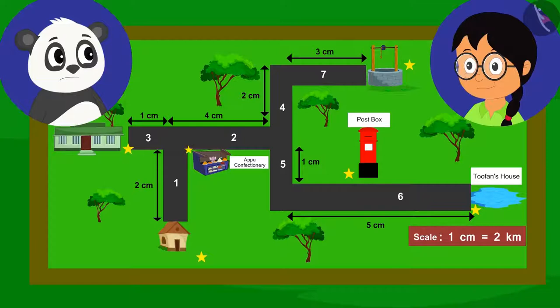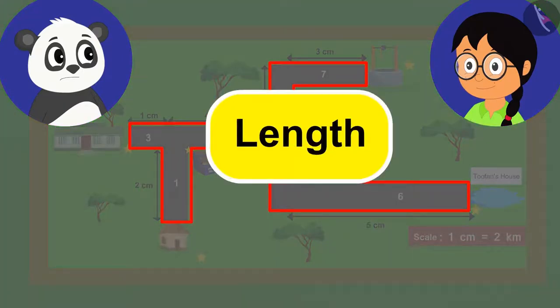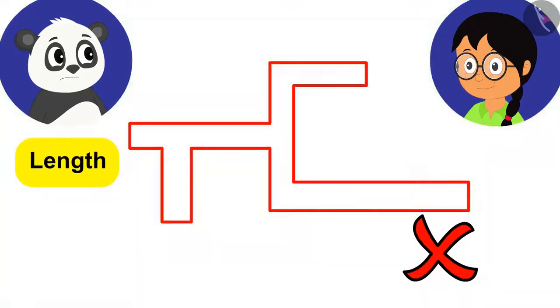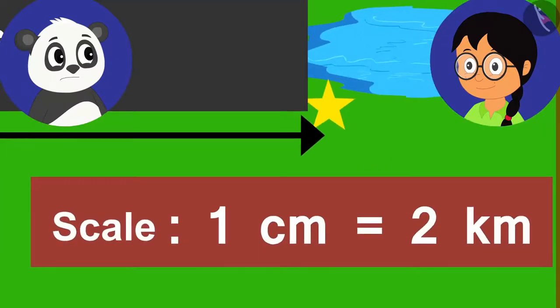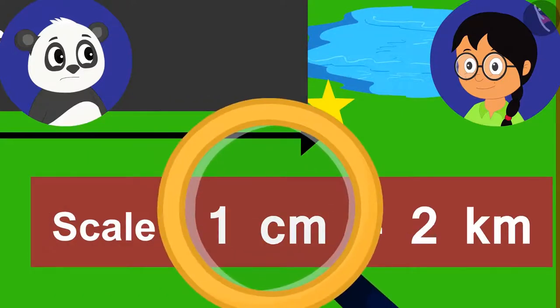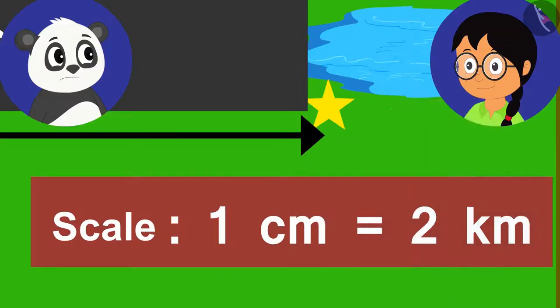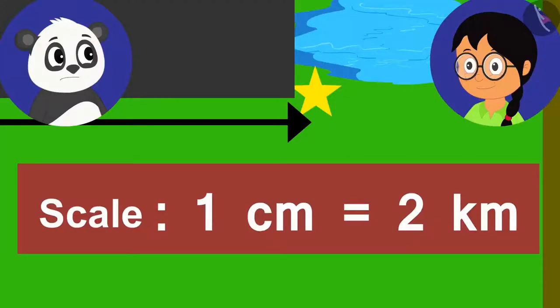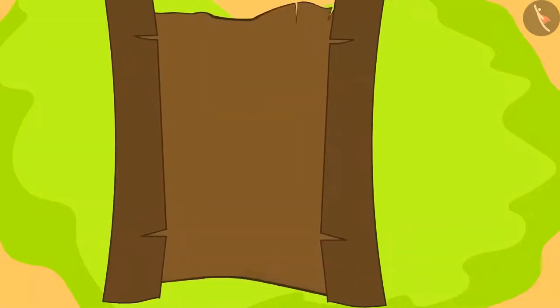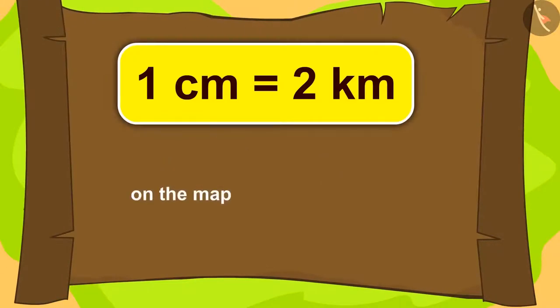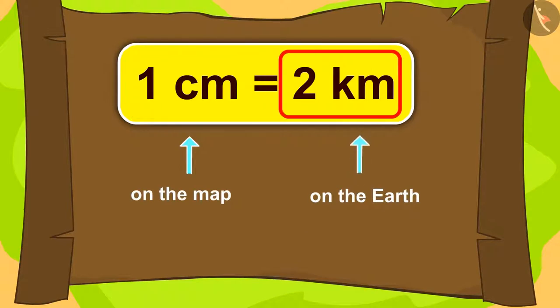Meenu is explaining to Golu that because in reality paths are really long, we cannot show their length on a small paper. Therefore, we use scale. As written on this map, 1 cm equals 2 km. What could it mean? This means that 1 cm of map is equal to 2 km on the earth.